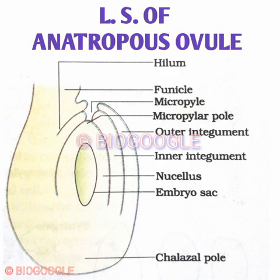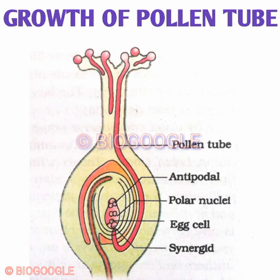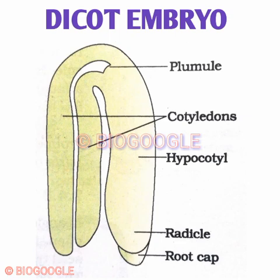For the mature embryo sac, you must clearly mention the antipodals towards the chalazal end and synergids towards the micropylar end — that is very important in the examination. Next is the growth of pollen tube: show the transverse section of a flower showing the pollen tube germinating inside the style after pollination. Next is the dicot embryo.